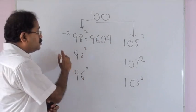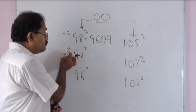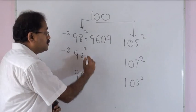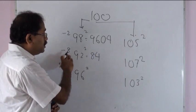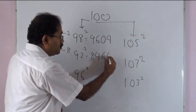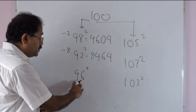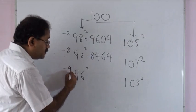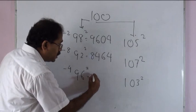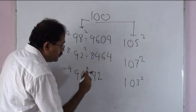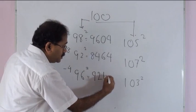Look at 92, which is 8 less than 100. Therefore 92 minus 8, which is 84, followed by 8 squared, which is 64. So 92 squared is 8464. Next, 96 is 4 less than 100, so 96 minus 4 is 92, followed by 4 squared, which is 16. So 96 squared is 9216.